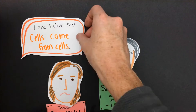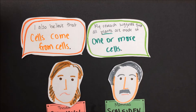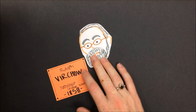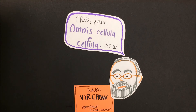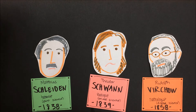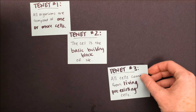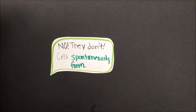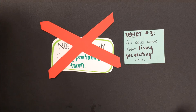Schwann believed that cells come from other cells. Schleiden believed that plants were made of one or more cells, but disagreed with this idea, believing instead that cells spontaneously burst into life through a process called spontaneous generation. Arguing and debating continued for many years. It was not until the 1850s when a scientist named Rudolf Virchow came on the scene and settled the matter once and for all. He said that all cells come from other living, pre-existing cells. Taken together, the findings of these three scientists create what we now know as cell theory. The tenets of cell theory are as follows: one, all organisms are composed of one or more cells; two, the cell is the basic building block of life; and three, all cells come from living, pre-existing cells. It is this third part that disproves what Schleiden believed in spontaneous generation, which we know is not true.